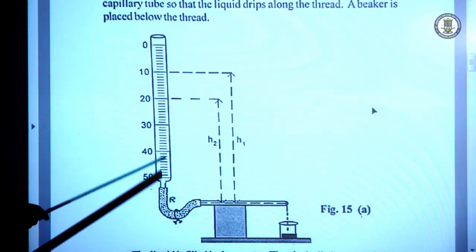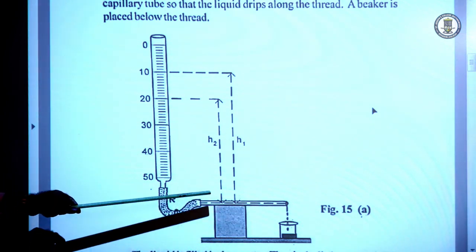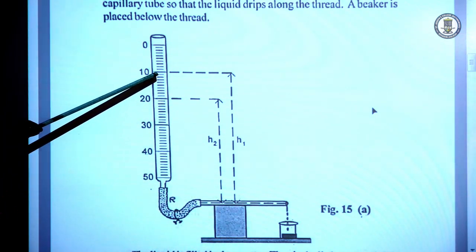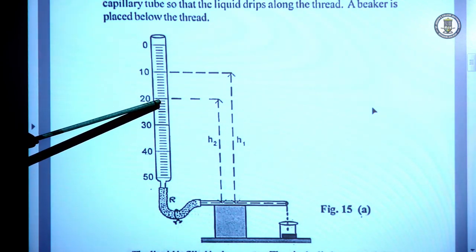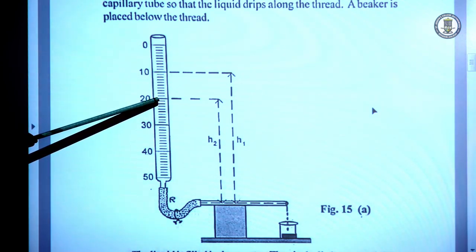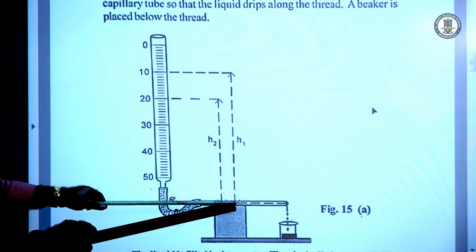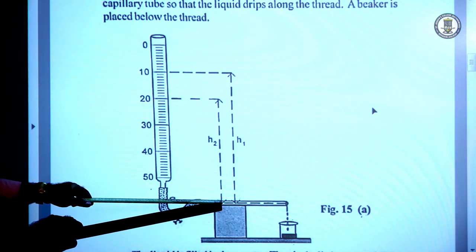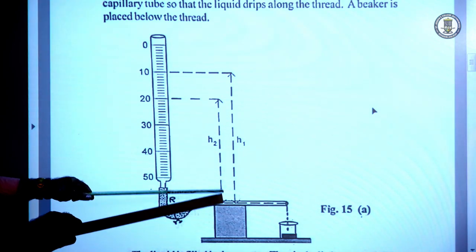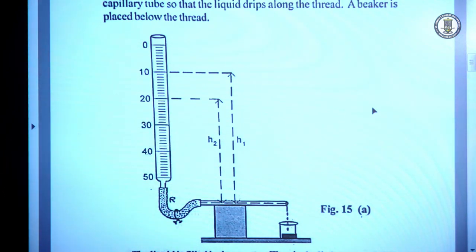When the stopper is opened, the liquid flows through the capillary tube — that is capillary flow. If we take a range 10 to 20, the volume equals 10 cc. H1 is the height measured from the capillary tube to the level 10, and H2 is the height measured from the capillary tube to level 20.